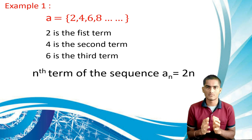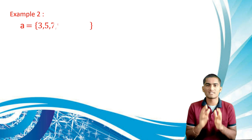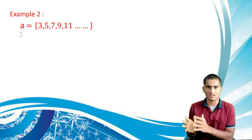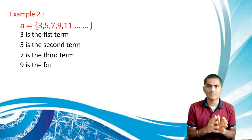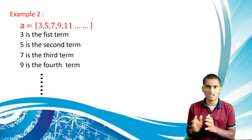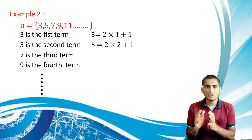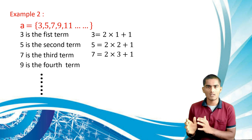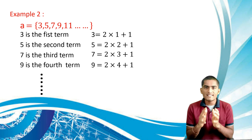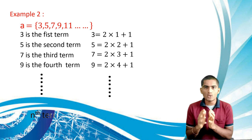Example 2: the sequence 3, 5, 7, 9, 11, and so on. The first term is 3, second is 5, third is 7, fourth is 9. We observe: 3 = 2(1)+1, 5 = 2(2)+1, 7 = 2(3)+1, and so on. These elements follow a pattern: 2n+1. This is the nth term of the sequence.